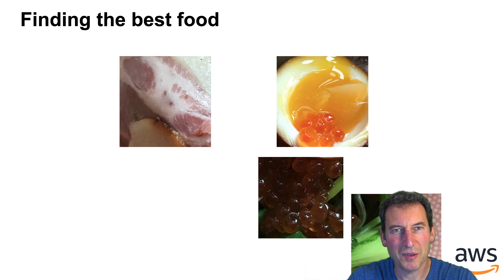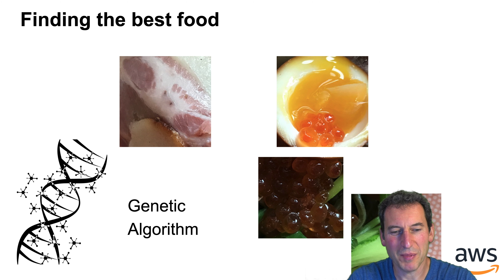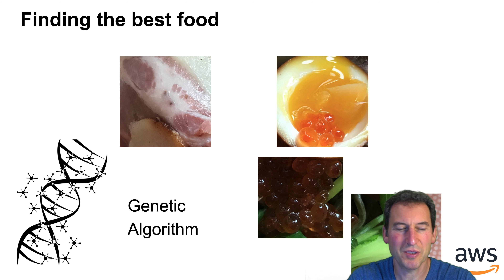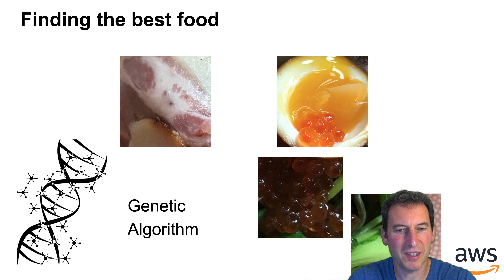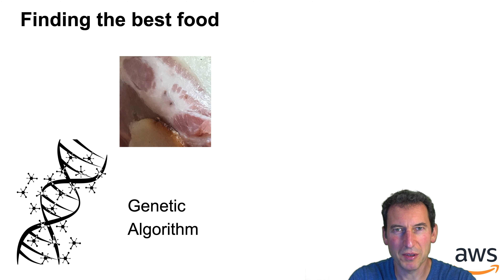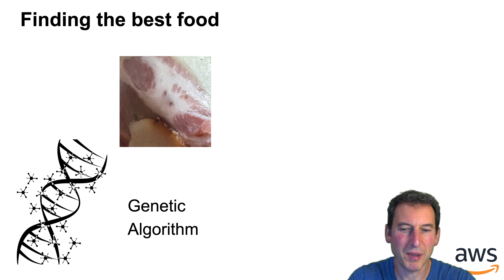If we wanted to use a genetic algorithm to find the best food, what we do is cook a dish, see how it goes, then look at the next dish, and so on, until we find something that works. And lo and behold, if we do this, the genetic algorithm will pick some bacon.